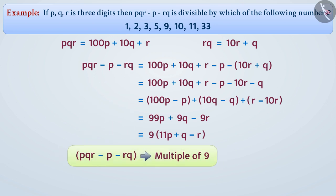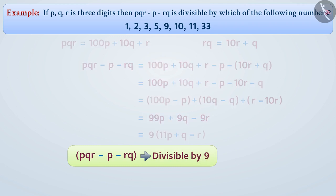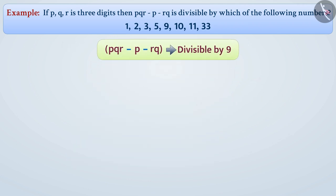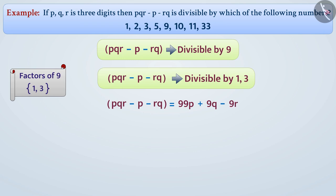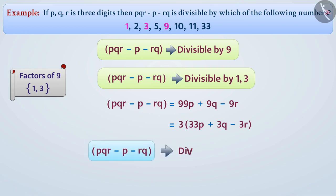The number is a multiple of 9, which means it is divisible by 9. Since it is divisible by 9, it will also be divisible by the factors of 9, that is 1 and 3. We can also write 99p plus 9q minus 9r as 3 times (33p plus 3q minus 3r), which shows it is also divisible by 3. So the given number is divisible by 1, 3, and 9.